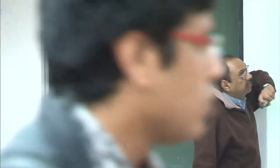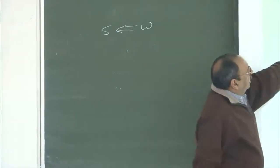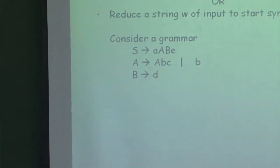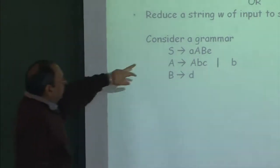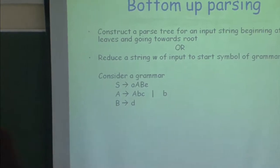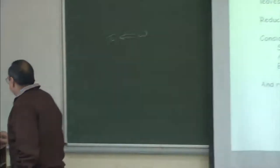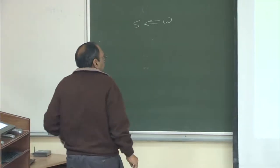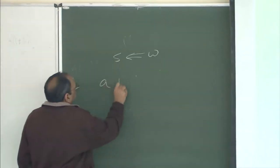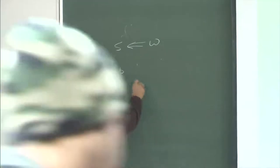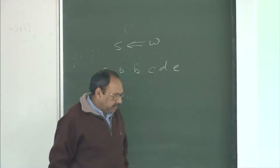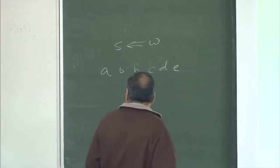Here is a grammar where I have the start symbol, and corresponding to the production of non-terminal A, I have two rules, and then I have one more rule from B. And here is a string I want to parse. Let us take this grammar and try to see whether this string belongs to the language specified by the grammar.